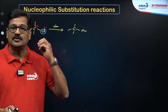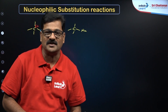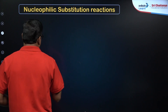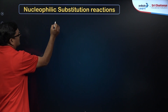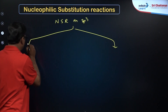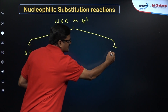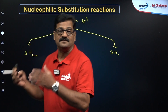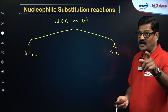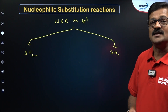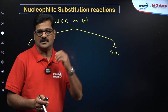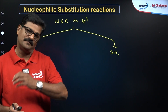Depending upon how the nucleophile is attacking and depending upon the kinetics of the reaction, nucleophilic substitution reactions on SP3 carbon atoms are broadly classified into two categories: SN2 reaction and SN1 reaction. Substitution nucleophilic bimolecular — where kinetics follows a bimolecular order — is SN2. Substitution nucleophilic unimolecular — where kinetics follows order one — is SN1. Let's discuss the broad picture of SN1 and SN2 and the factors that influence them.